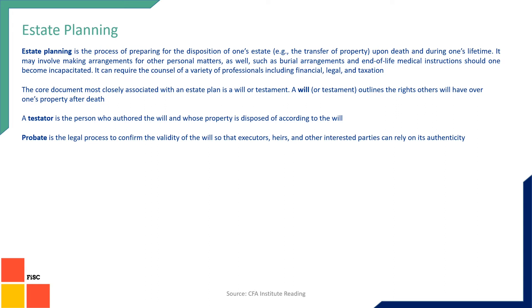A will is a document in which the testator — that means the person who has the estate — specifies to whom he wants to give his property. A probate is the legal process in which the property passes on from the deceased person to the survivors.